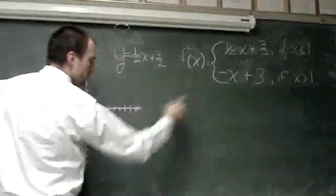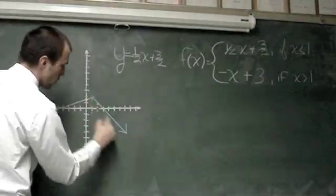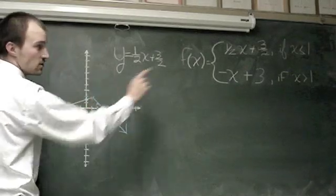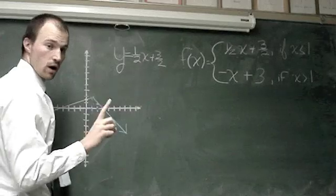and the opposite of x plus three, a negative one slope here, reflected, and everything is where x is greater than one.